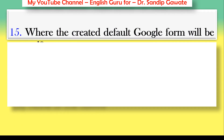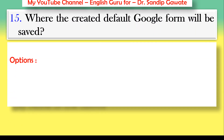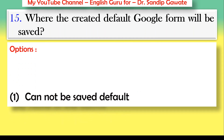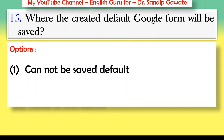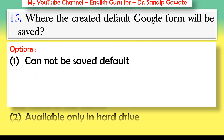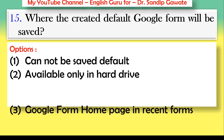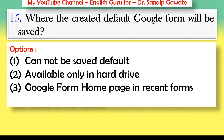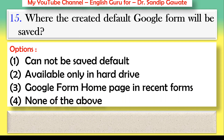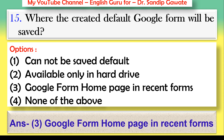Question 15: Where will the created default Google Form be saved? Options: it cannot be saved, default available only in hard drive, Google Form home page in Recent Forms, or none of the above. The correct answer is option number three — Google Form home page in Recent Forms.